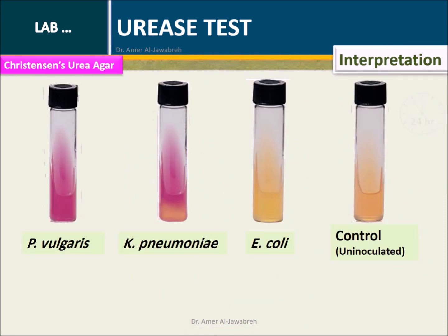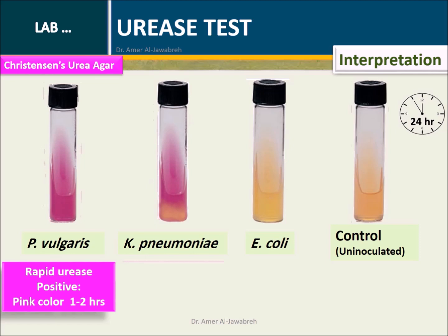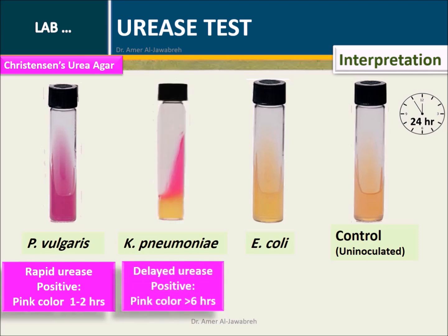Interpretation: Proteus vulgaris — rapid urease positive, pink color within 1 to 2 hours. Klebsiella pneumoniae — delayed urease positive, pink color after 6 hours.